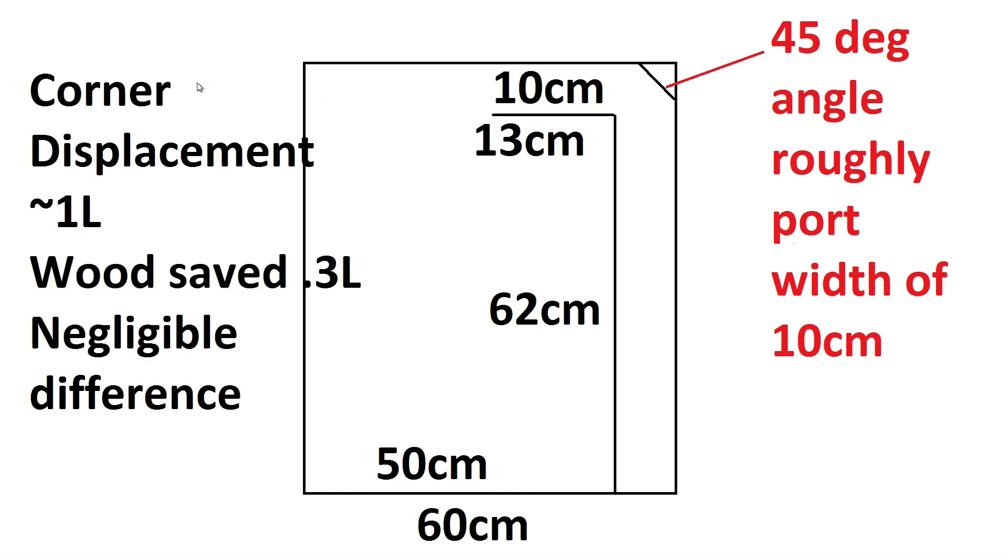So in regards to displacement, the corner displacement here is about an area of a third of a square decimeter and a depth of 3 decimeters, so this is about 1 liter. You also save about 0.3 liters by this port being shorter, so the difference is 0.7 liters. Not much of a difference at all. I would call this negligible and I wouldn't bother extending the box in any direction in order to get that volume of air back, as at this point it really doesn't matter.